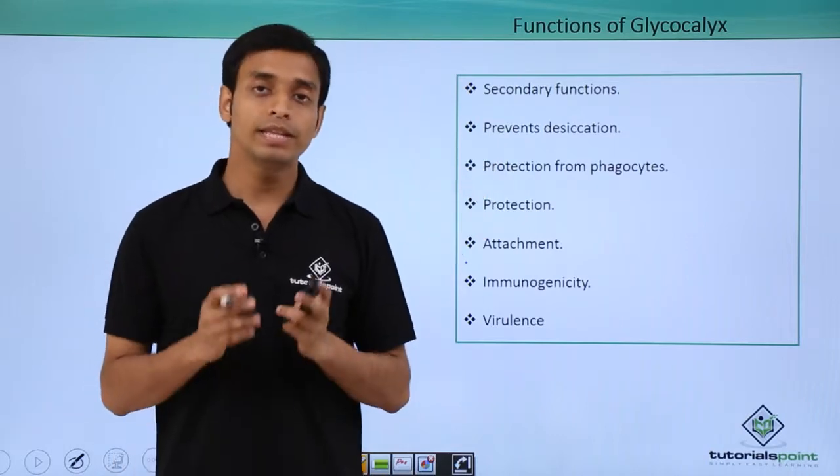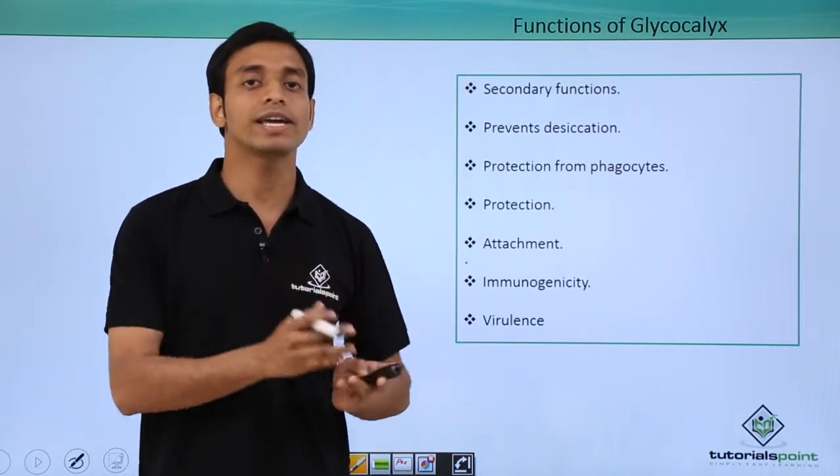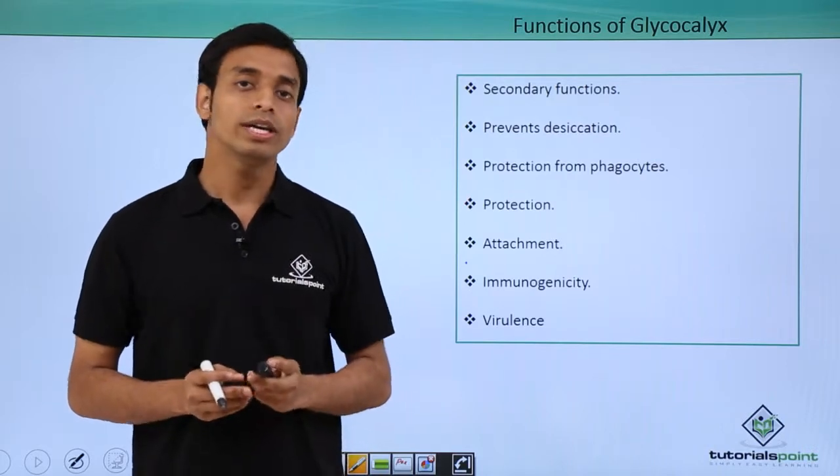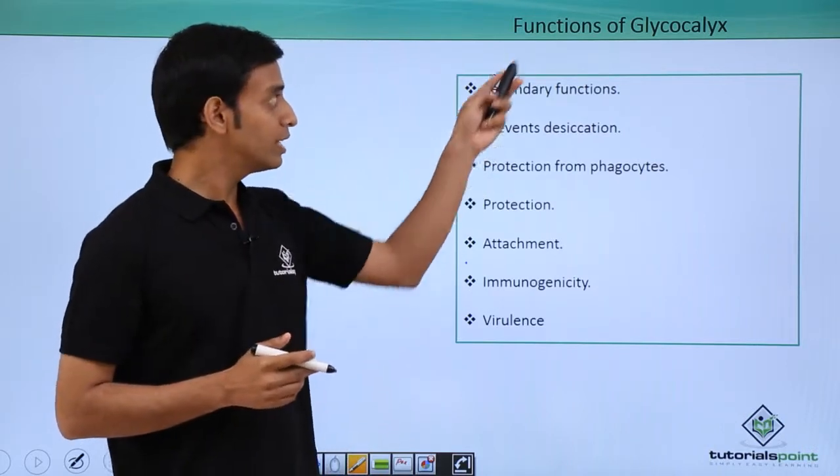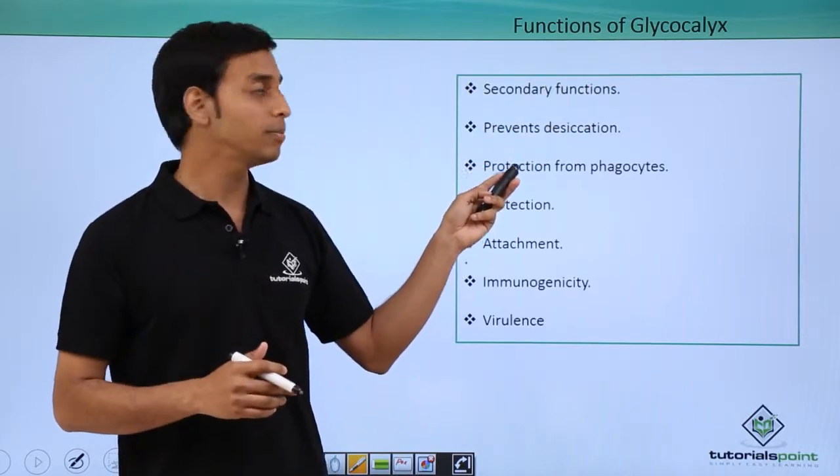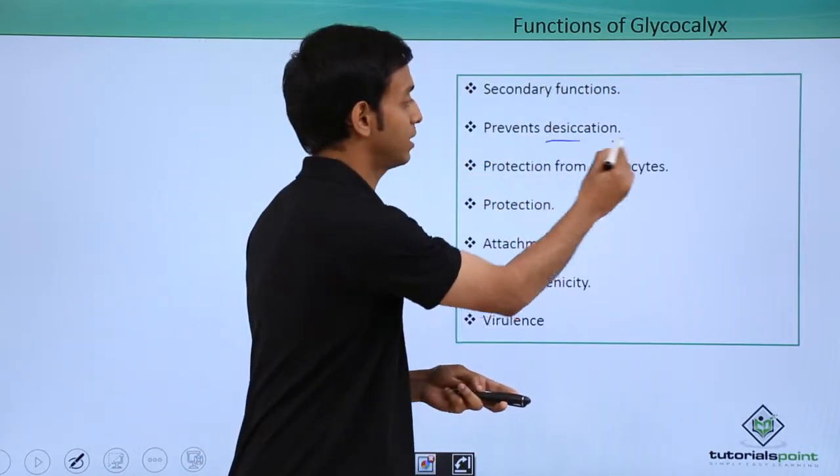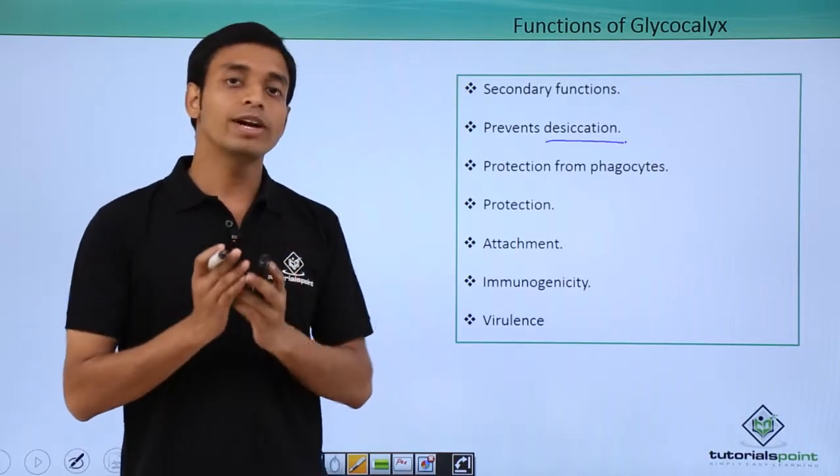First of all, they prevent desiccation. Desiccation means the drying up of the cells. We know if cells dry up, they will die. So these glycocalyx layers prevent the death of the cell by preventing the process of desiccation.